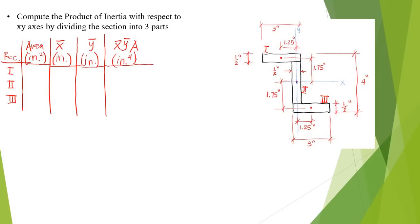For rectangle number one, the area is 3 inches by 0.5 inch, so 3 times 0.5 equals 1.5 square inches. For rectangle number two, the height is 4 minus 0.5 minus 0.5 equals 3 inches, and 3 times 0.5 gives area equals 1.5. For rectangle number three, the area is similarly 1.5 square inches.